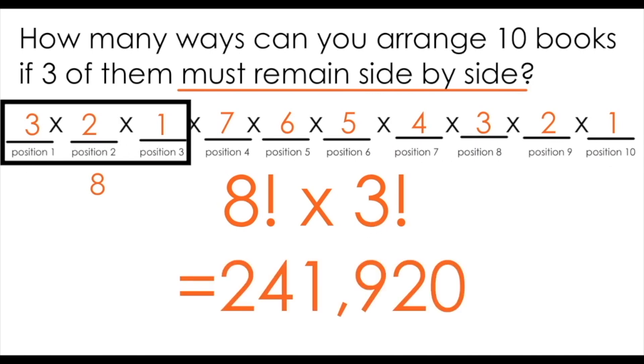So in total, there are 241,920 possible ways that I can arrange 10 books if three of them have to be side by side.